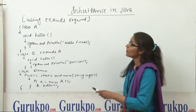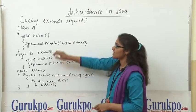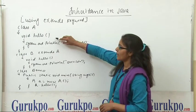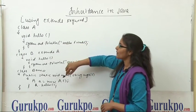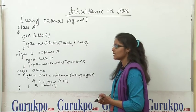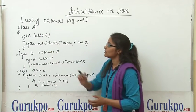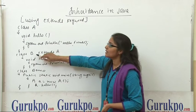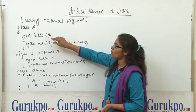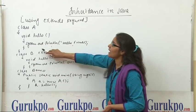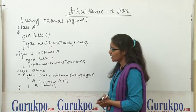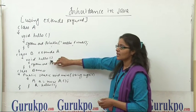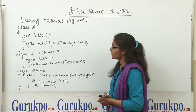Here, we have created a class A. This class is the superclass and we have created a method hello, and we are printing 'hello friends' in this method. Now this class is closed here. Class B is a subclass. This subclass is extending the properties of class A using the extends keyword, and we are overriding this method of the superclass here and printing 'override'.